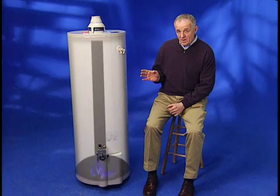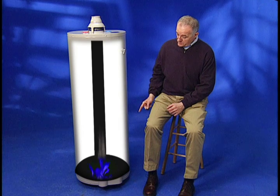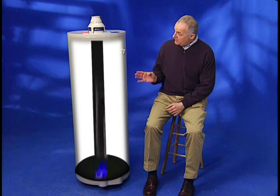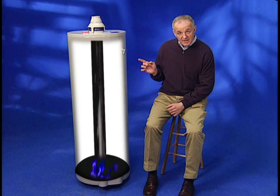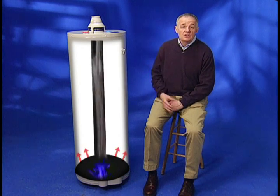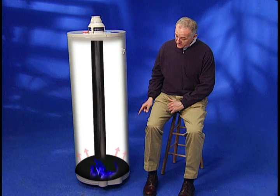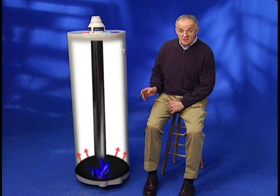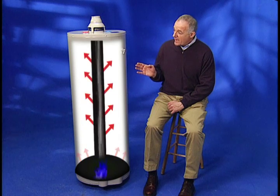In a conventional gas water heater, hot gases produced by the burner vent vertically through a flue tube running through the center of the tank. Most of the heat generated is transferred to the water through the tank bottom, but heat also transfers from the hot gases rising through the flue tube.